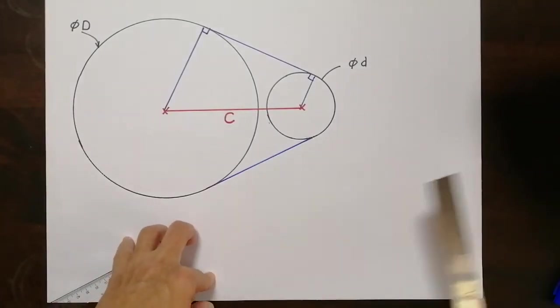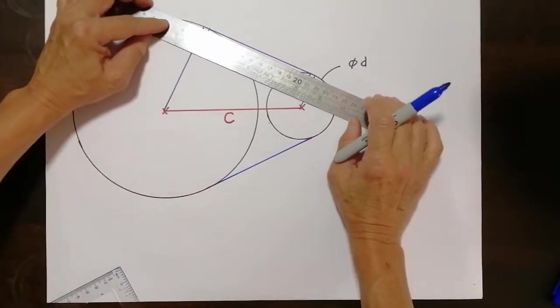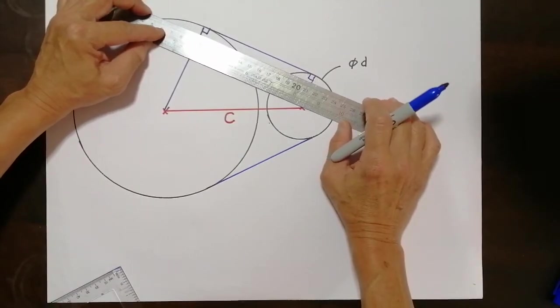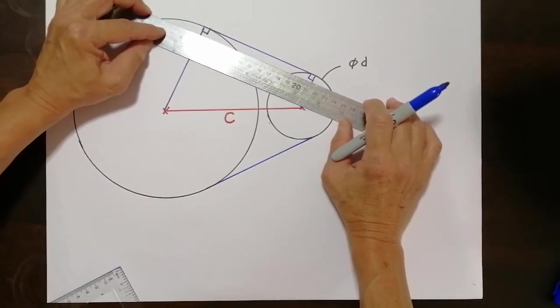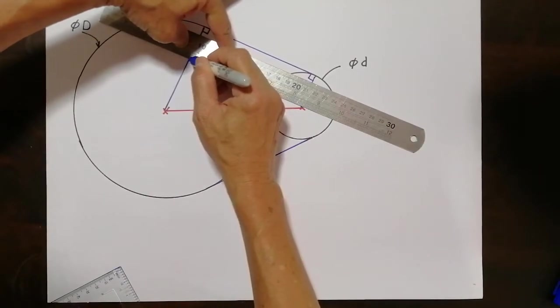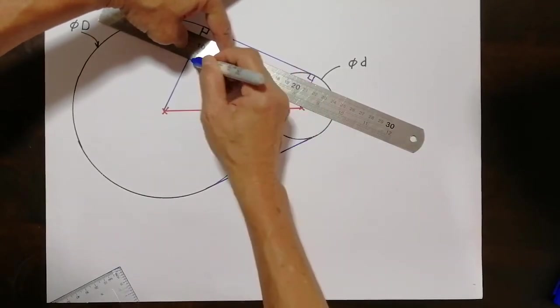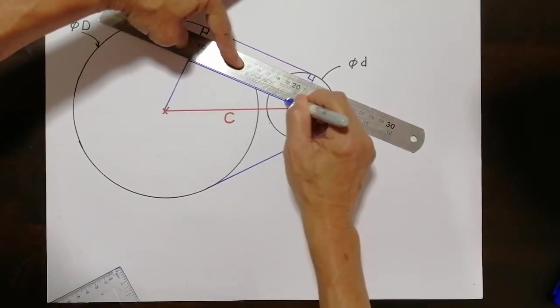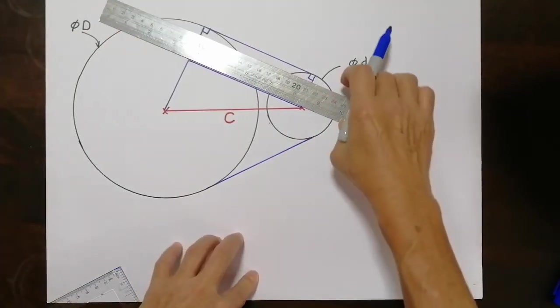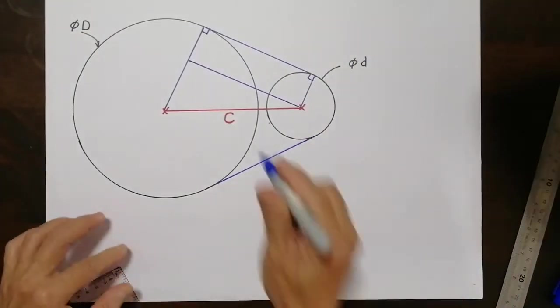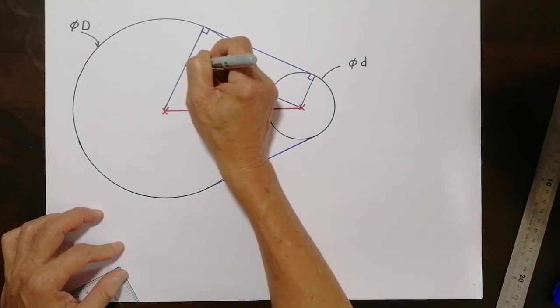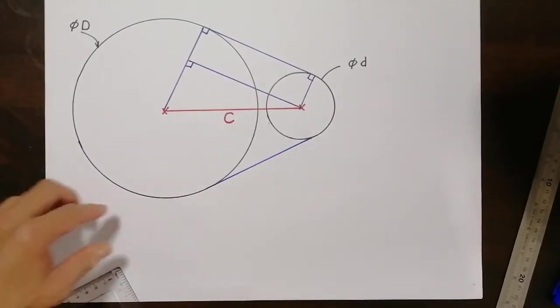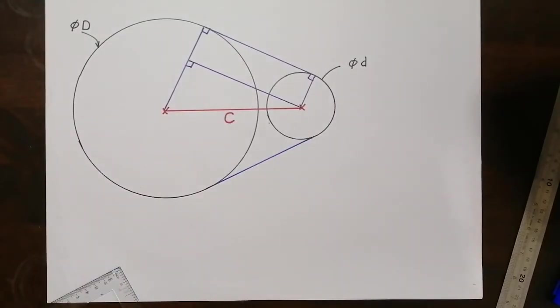Now if I were to draw a rectangle from here, this and this is a rectangle. These two lines are parallel. Now obviously this is going to be 90 degrees. And you realize that right in the middle, I have a very interesting triangle.